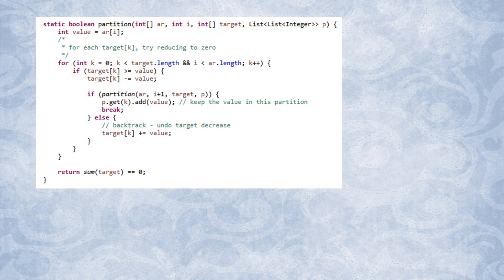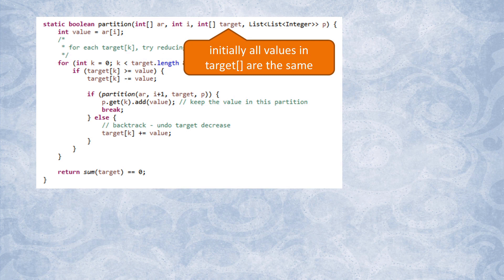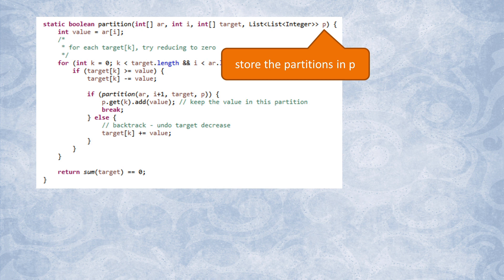Here is an example implementation written in Java. Along with the original array of input values, we pass in the index to this array, as well as the previously mentioned array of targets. The last variable, p, is a list into which we'll be storing the completed partitions.